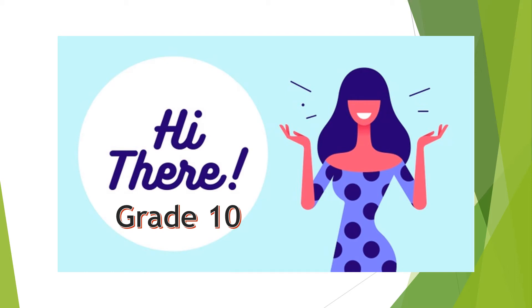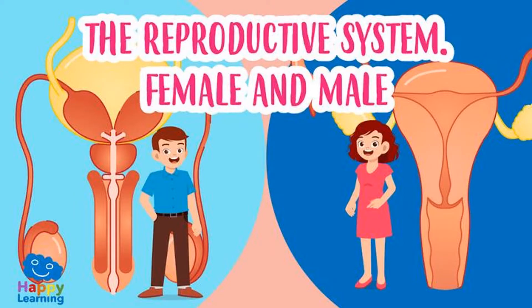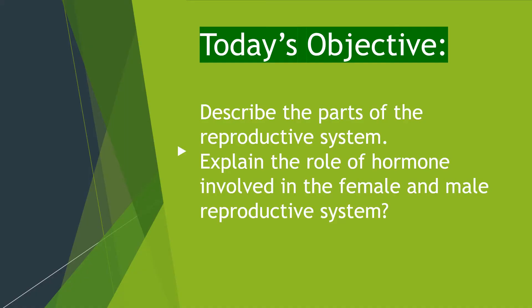Hi there, Grade 10! Today's topic is the reproductive system — female and male reproductive system. For today's objective, we need to describe the parts of the reproductive system and explain the role of hormones involved in the female and male reproductive system.